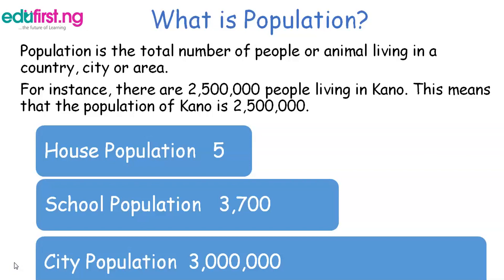The total number of people in Lagos, for instance, is three million. This means the population of Lagos city is three million.